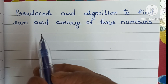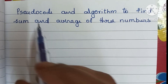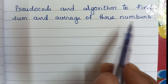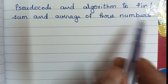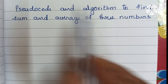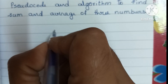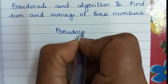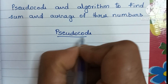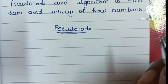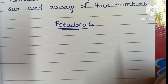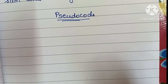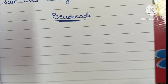In this video we're going to learn how to write pseudocode and algorithm to find sum and average of three numbers. Pseudocode is a detailed description of what a computer program should do.